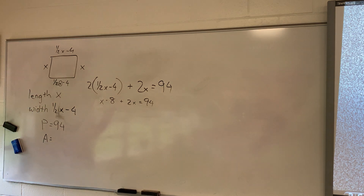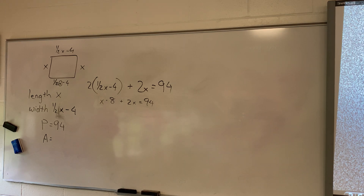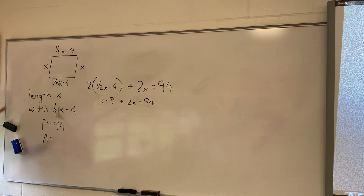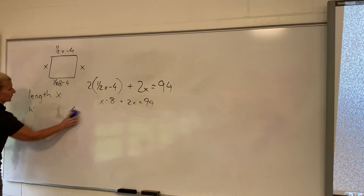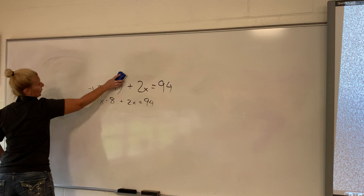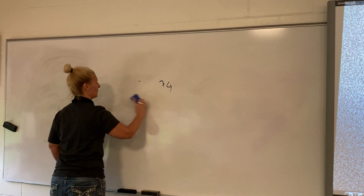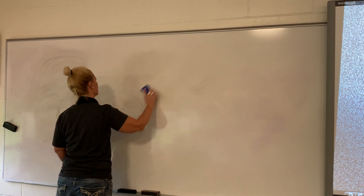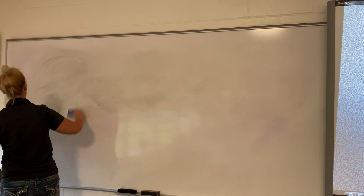Is everybody okay with that? So once you find x, you've got to go plug it in and find your length and your width, then multiply your length and width together to get your area. You can't stop when you find x. That was number 21, and y'all are good with that problem because you can work that on your own time. So that takes care of 21. Now the other word problem — because I'm pretty positive on your test there's one like this other word problem.